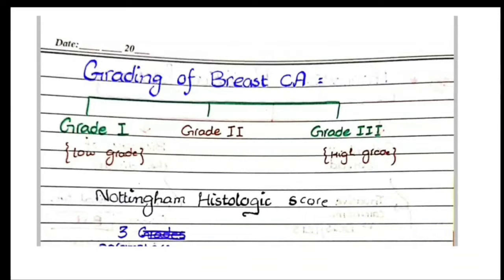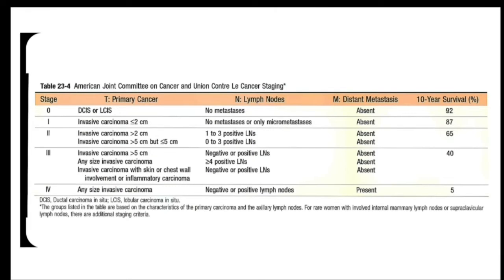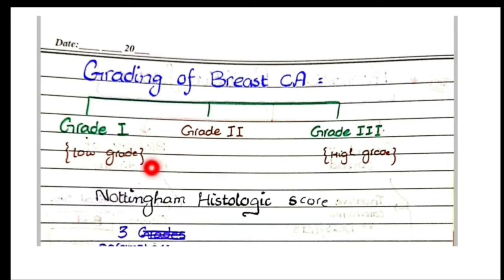In this video we will discuss the grading and staging of breast cancer. According to grade, breast cancers are divided into three categories: grade 1 or low grade, grade 2, and grade 3 or high grade.